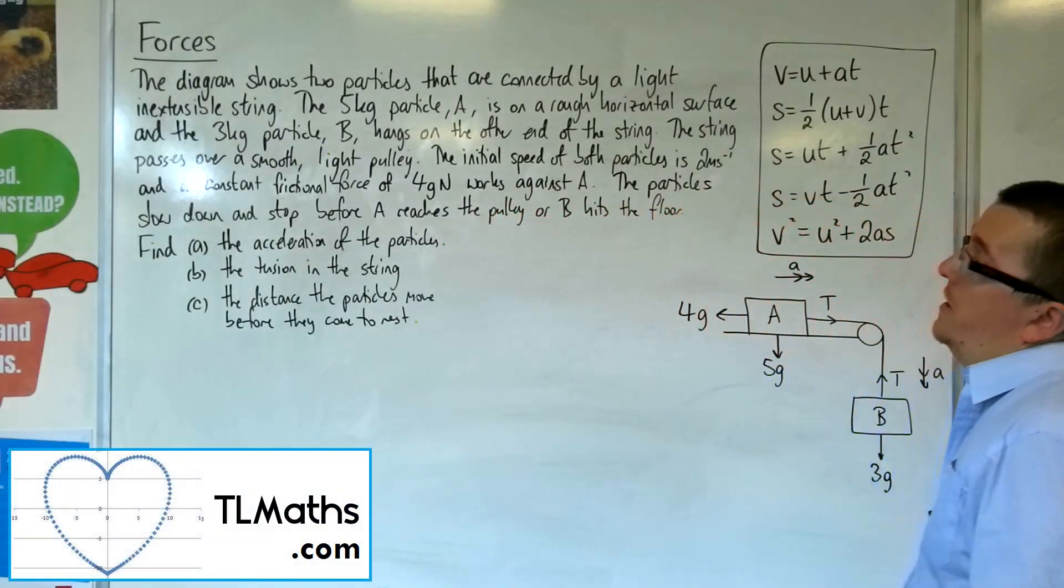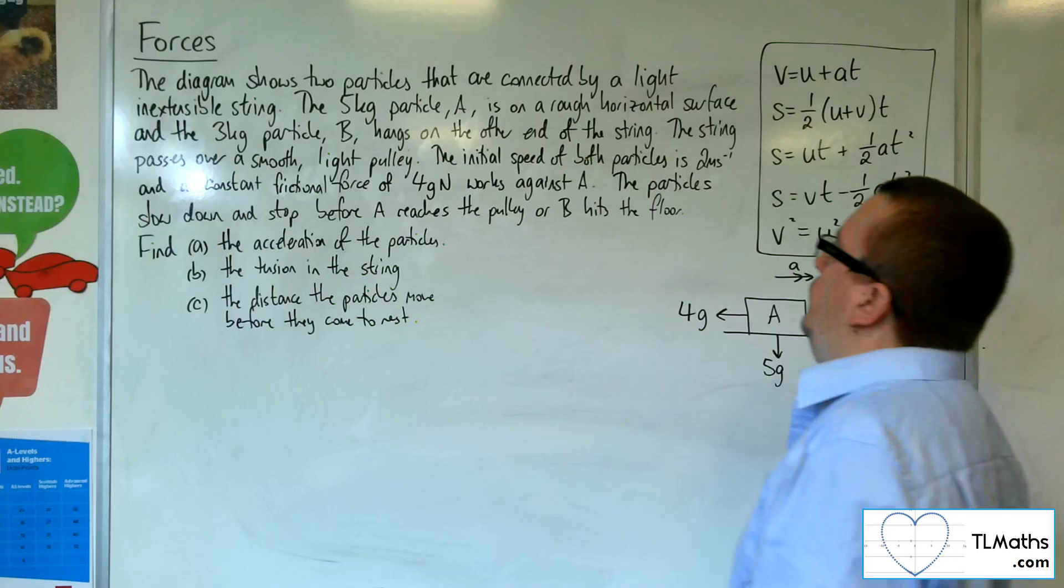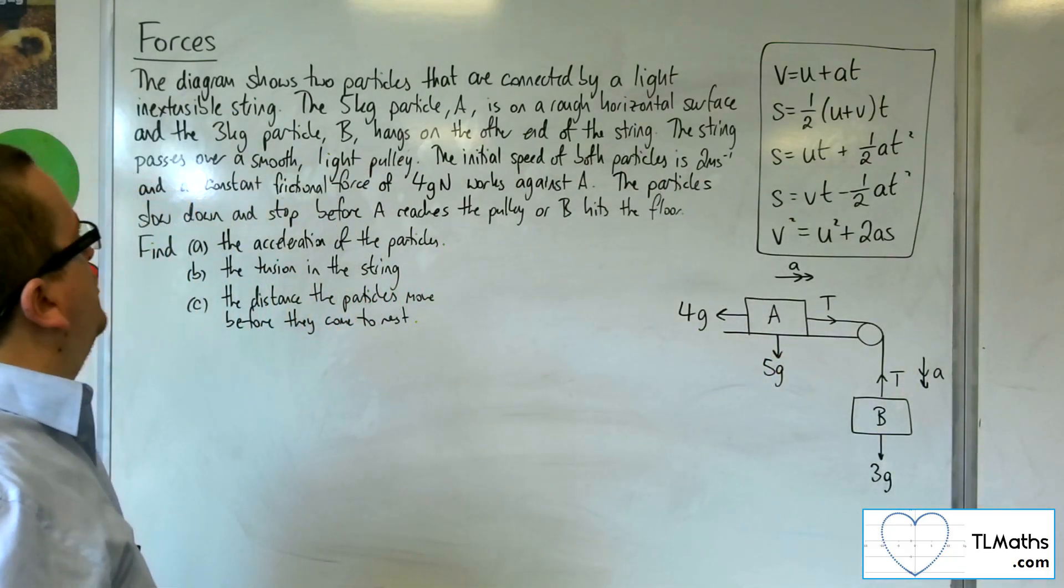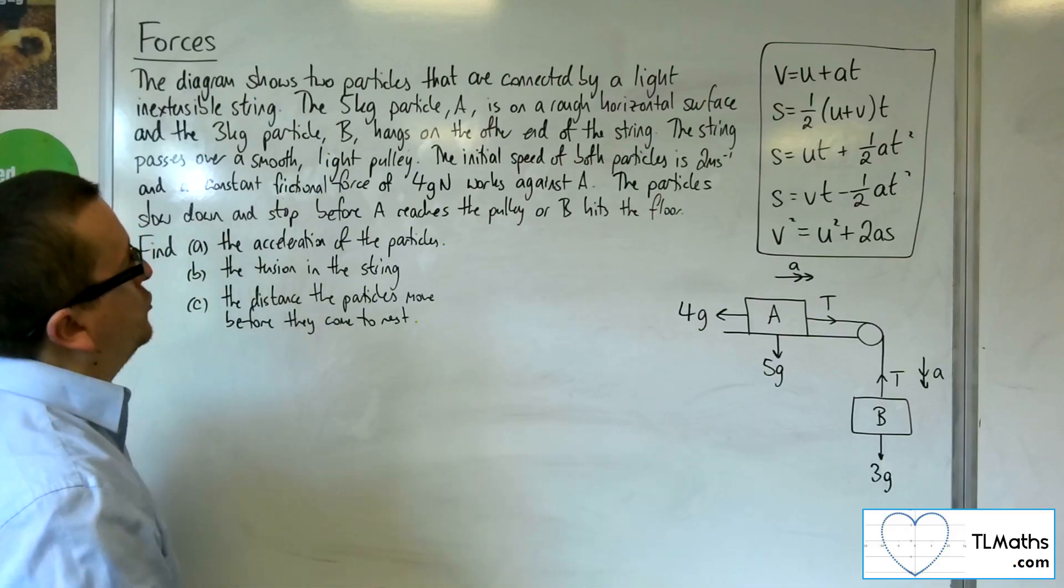In this video, we've got a diagram that shows two particles that are connected by a light and extensible string. The 5 kilo particle A is on a rough horizontal surface, and the 3 kilo particle B hangs on the other end of the string.